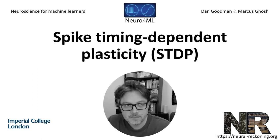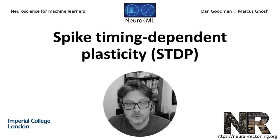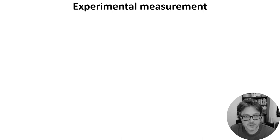Spike timing dependent plasticity, which is shortened to STDP, is a form of Hebbian learning that takes the timing of individual spikes into account. Let's start by talking about how it's measured experimentally.